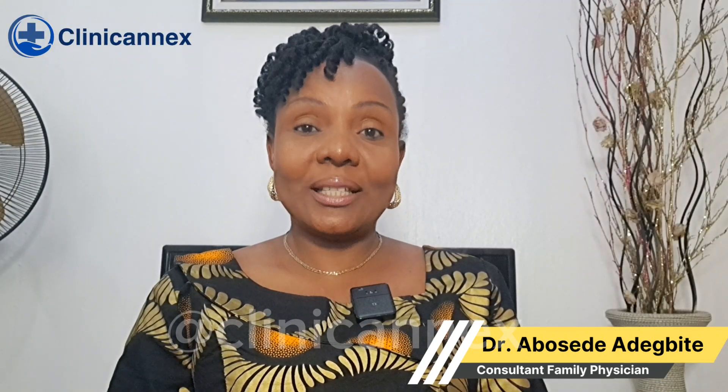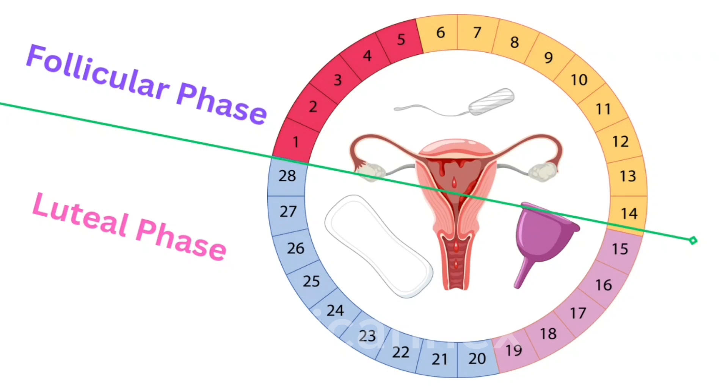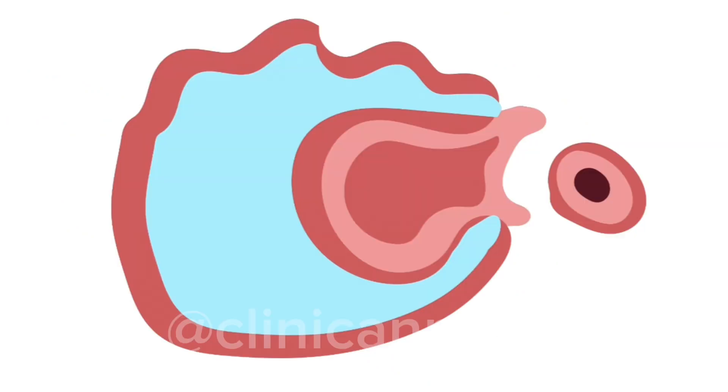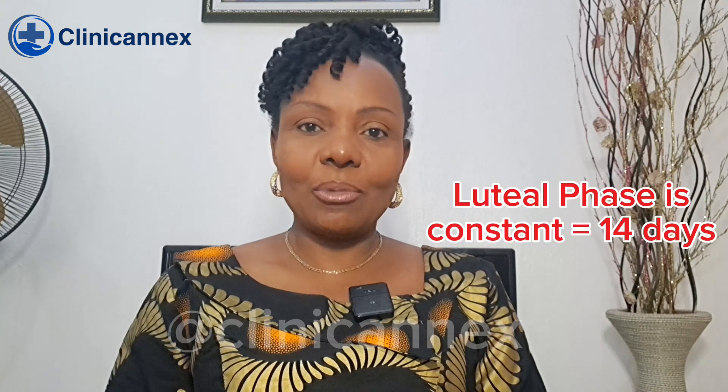So how do you calculate your ovulation period? There are two phases in the menstrual cycle. The follicular phase, when the eggs are maturing, and the luteal phase, when, if fertilization takes place, the follicle or the shell from which the egg drops from sustains the pregnancy until the placenta is well established. That is the second phase.